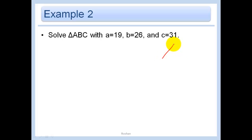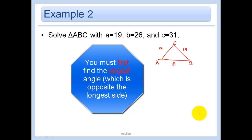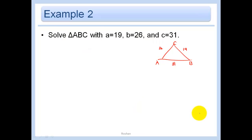In this problem we have three side lengths and no angles, so I definitely need to use the law of cosines. Side a=19, b=26, c=31. Something really important: you want to start by finding the largest angle first. You do that so the other two angles are definitely going to be acute — if there's an obtuse angle, you need to find it first. After using the law of cosines, we'll use the law of sines, which always pops out an acute angle.